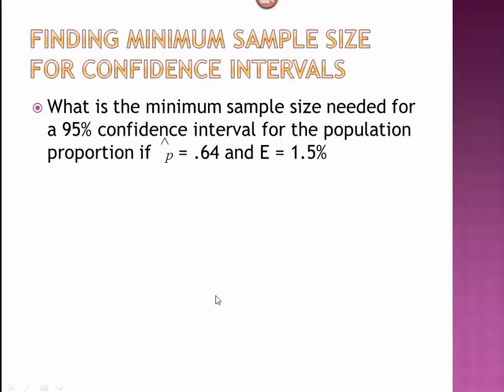Let's look at an example. What is the minimum sample size needed for a 95% confidence interval for the population proportion if p-hat we believe is 0.64, and our margin of error is 1.5%? In this case, we have an idea of what p-hat is, so we're going to use that. Had we not been given this number, we would just default back to 0.5. But since we have an idea of p-hat, we're going to use it because it's going to mean that we're going to have to talk to fewer people, which is always good.